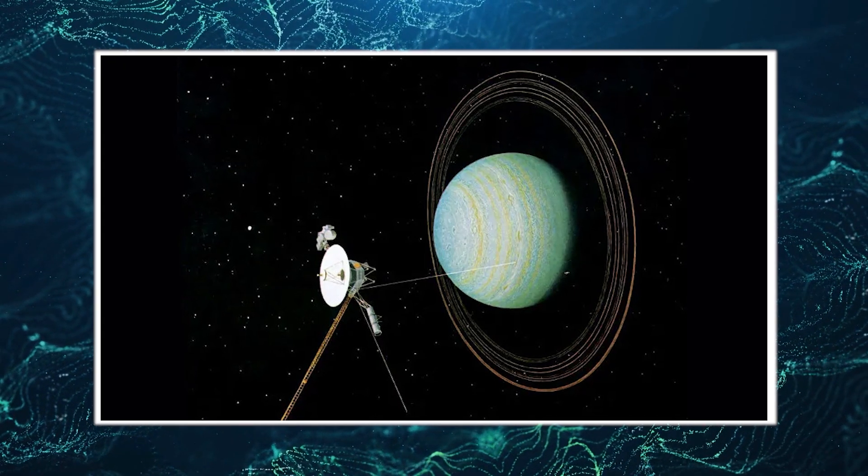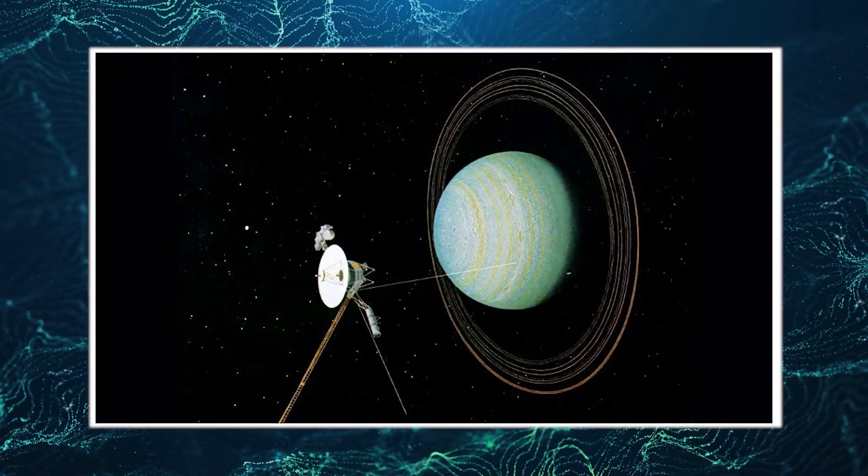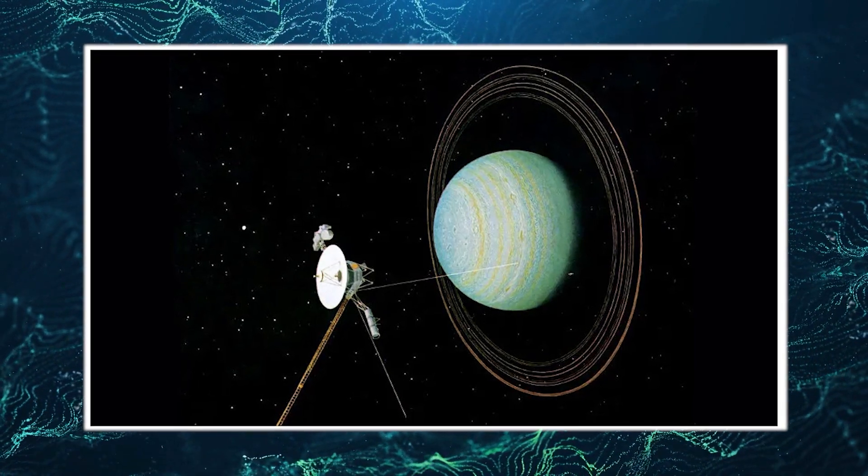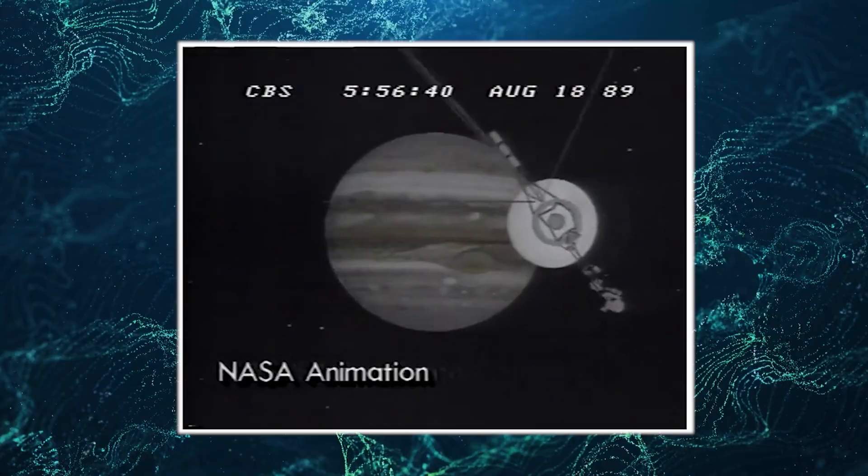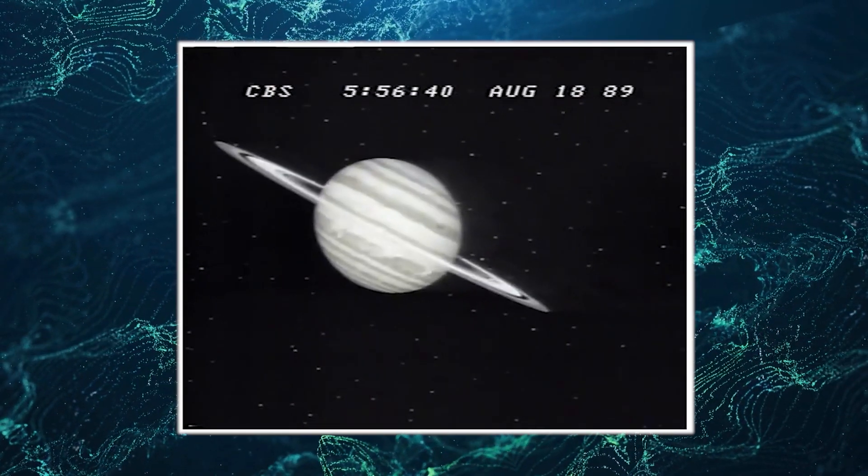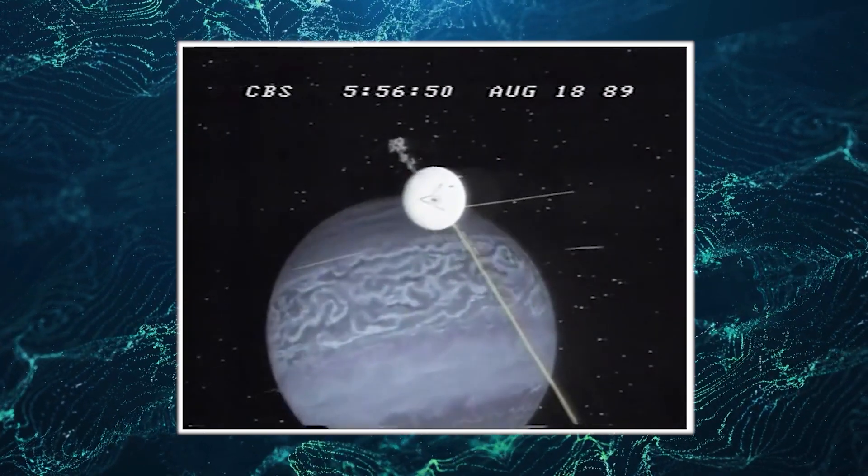Voyager 2 made history by being the first spacecraft to come close to Uranus in 1986 and then sailing past Neptune nearly three years later. It remains the only spacecraft to have embarked on such an extraordinary journey thus far.